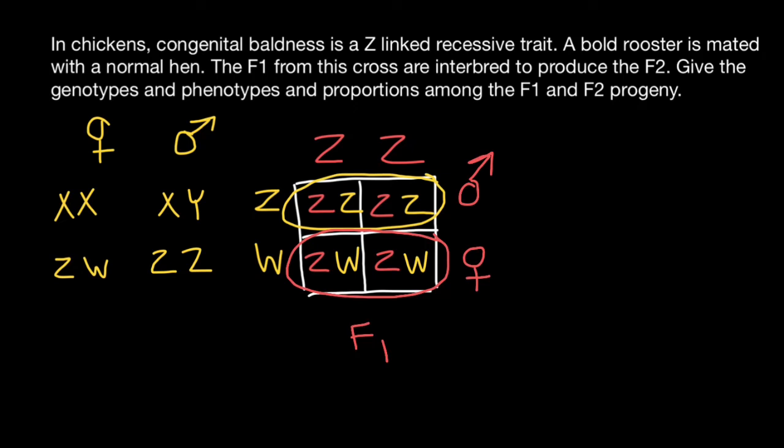Now let's take a rooster from the F1 generation. It's going to have one defective Z chromosome and one normal Z chromosome. As for the hen, each hen would have the same genotype, which is a defective Z chromosome and a normal W chromosome. Again, we just build a simple Punnett square.